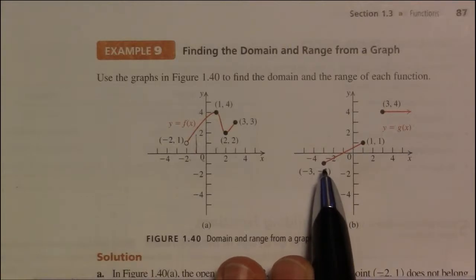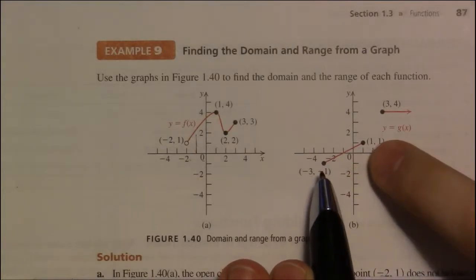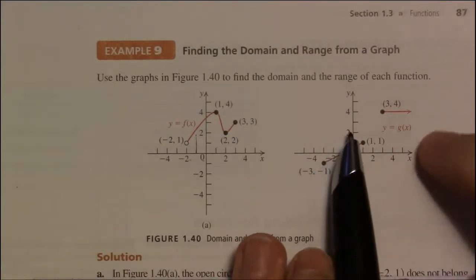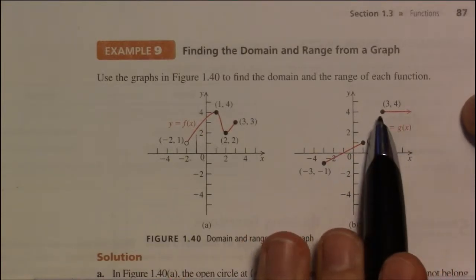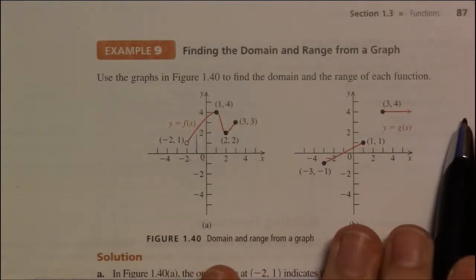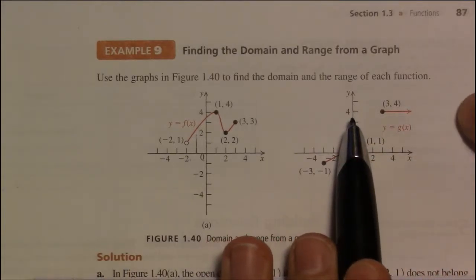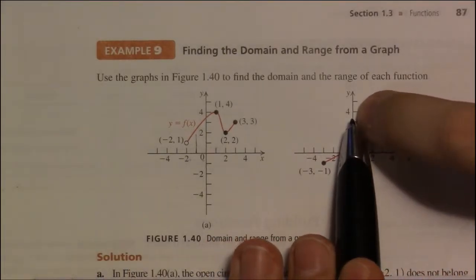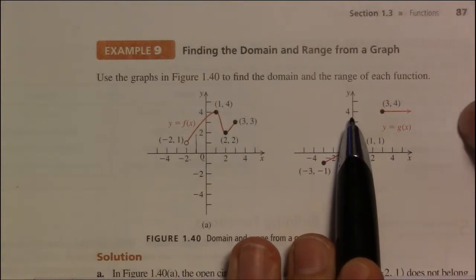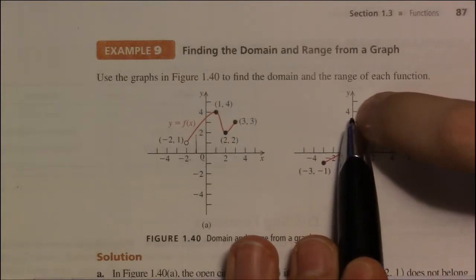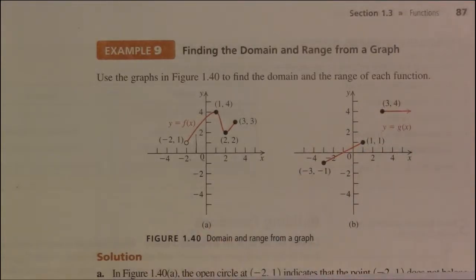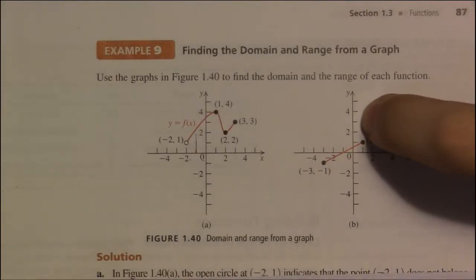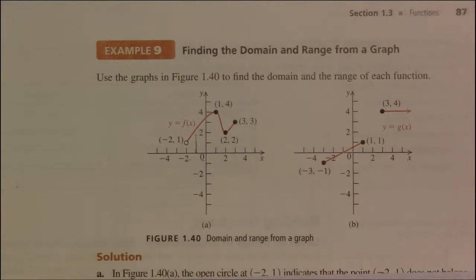So, that's one part of the range, from minus 1 to 1. This whole line here is just horizontal. So, when we push all this stuff onto the y-axis, the only thing this is going to cover is y equals 4. That whole line just gets smashed to one point on the y-axis.